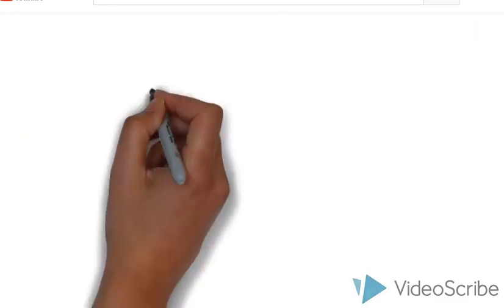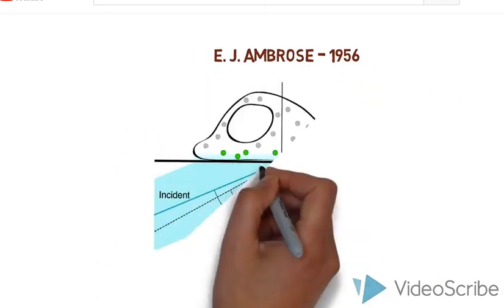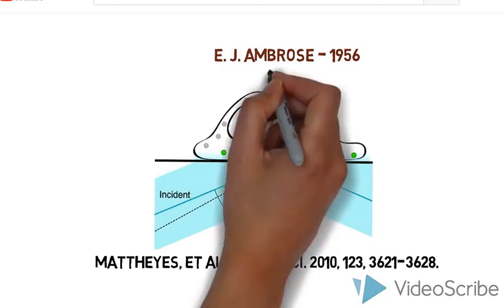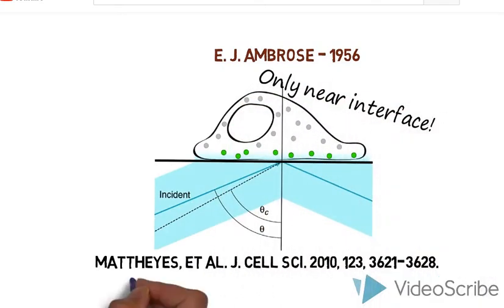This is where our friend E.J. Ambrose comes in, who, in 1956, found a way to study the cell-glass interface by controlling the excitation scheme so that only cell parts very close to the glass interface would be excited. He used Total Internal Reflection.